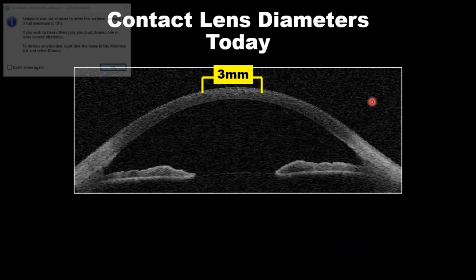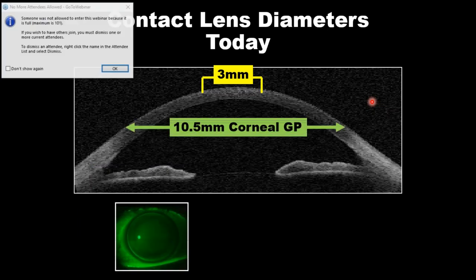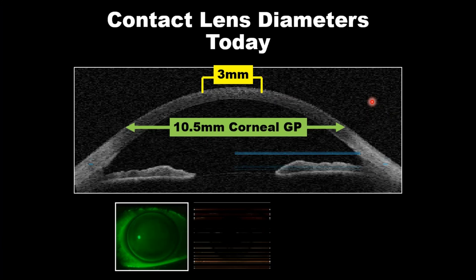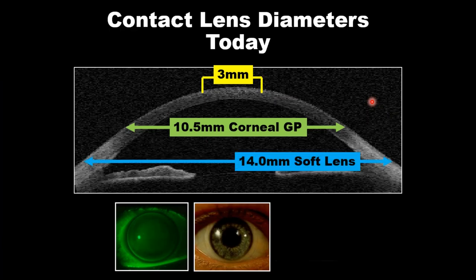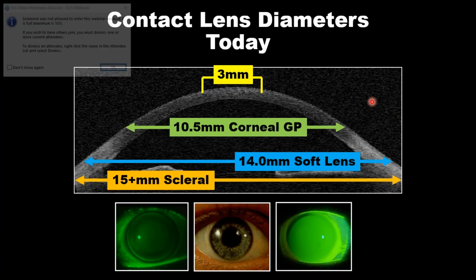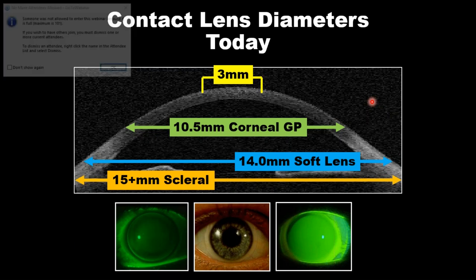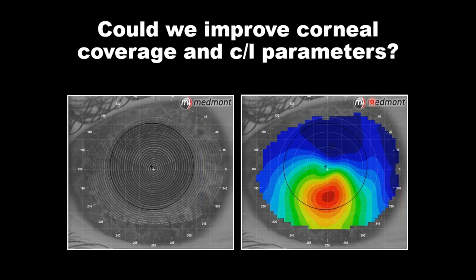Imagine: if K readings are taken at 3mm, what do we understand about fitting a corneal GP — today these lenses are much bigger, 10.5mm on average — or a soft lens at 14mm, or a scleral lens at 15mm? How can we use 3mm of the center to fit some of our irregular corneal lenses? Si el queratómetro mide solo 3mm centrales, no hace sentido adaptar un lente de 10.5mm, 14mm o 15mm con tan poca información.